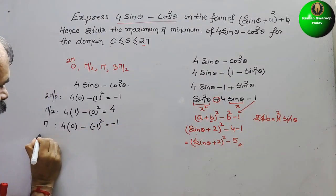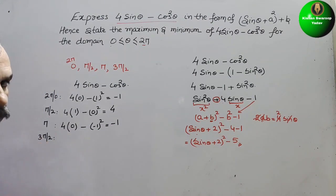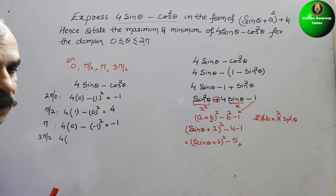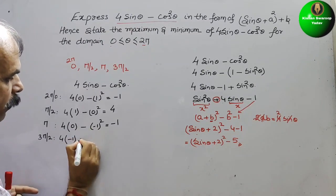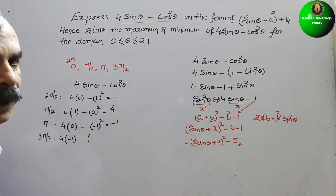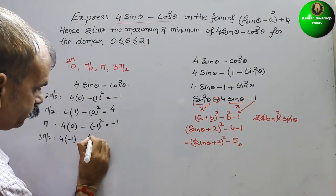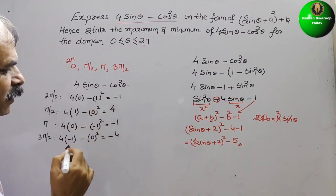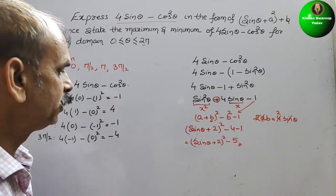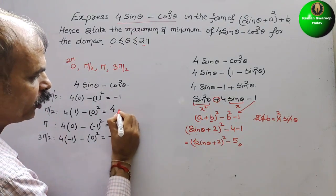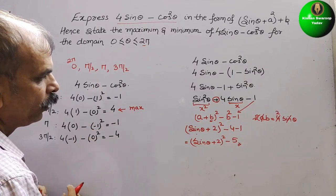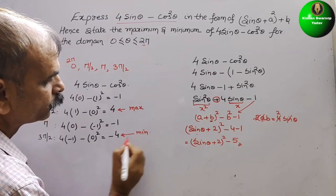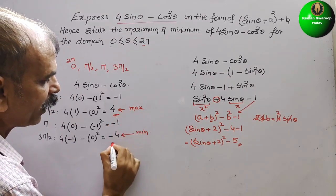Next, at theta equals 3 pi by 2: 4 sin(3 pi by 2) is 4 times minus 1, and cos(3 pi by 2) is 0, so 0 squared is 0. We get minus 4. So looking at all the values: the maximum value is 4 and the minimum value is minus 4.